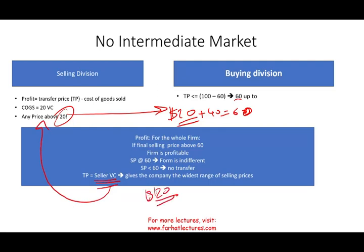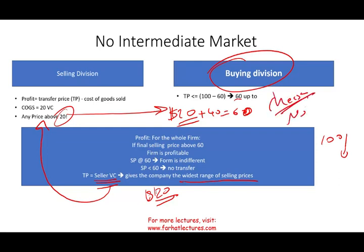So the best transfer price is the variable cost of the selling division — give it to them at $20. This gives the company overall the widest range of selling prices, because the final price of $100 might drop. Giving the cheese division enough pricing power means they can still make a profit even if prices fall, and the company overall remains profitable. The final product we're selling is cheese, not milk — and that's the implied assumption here.